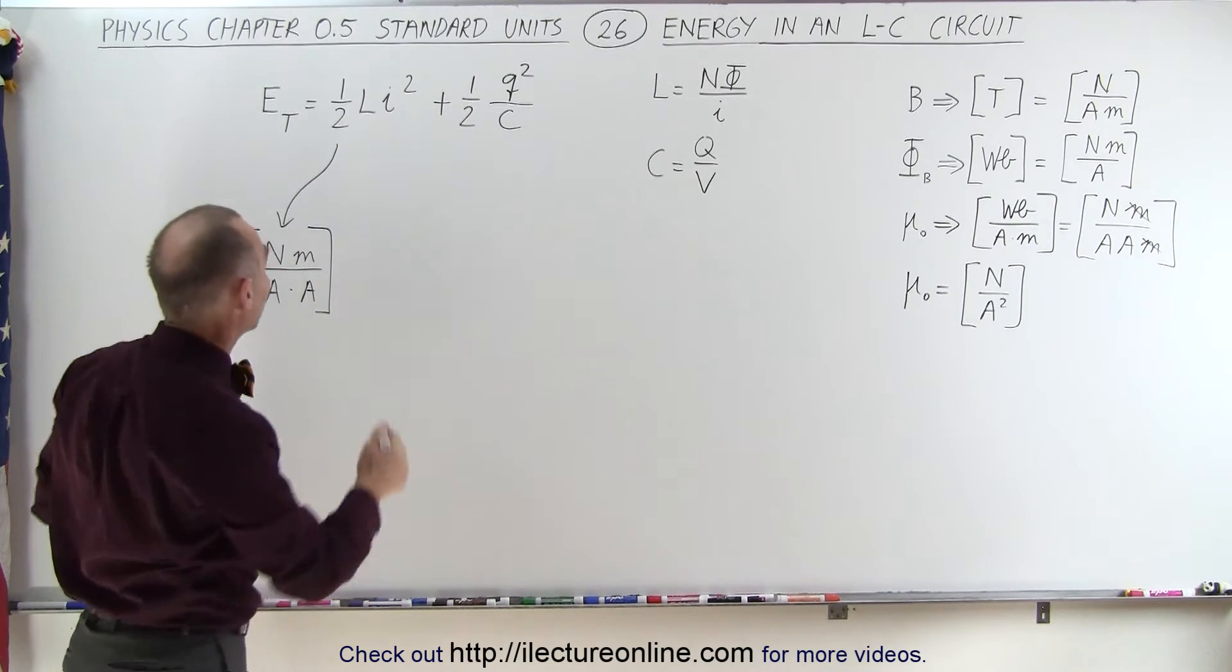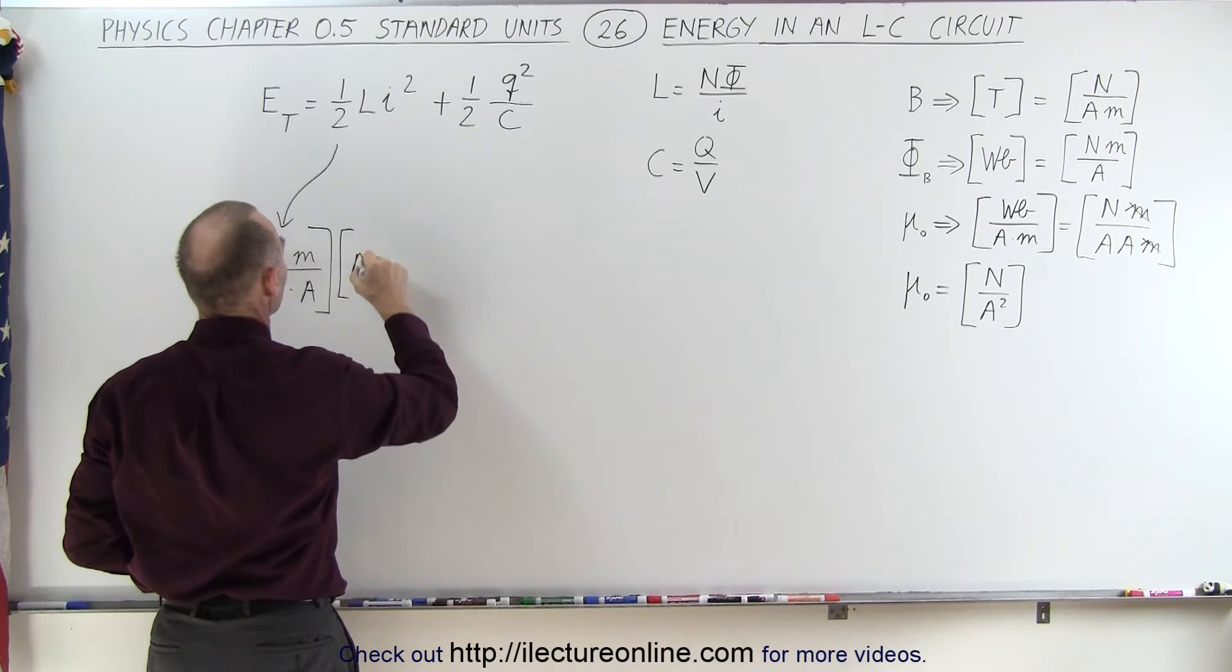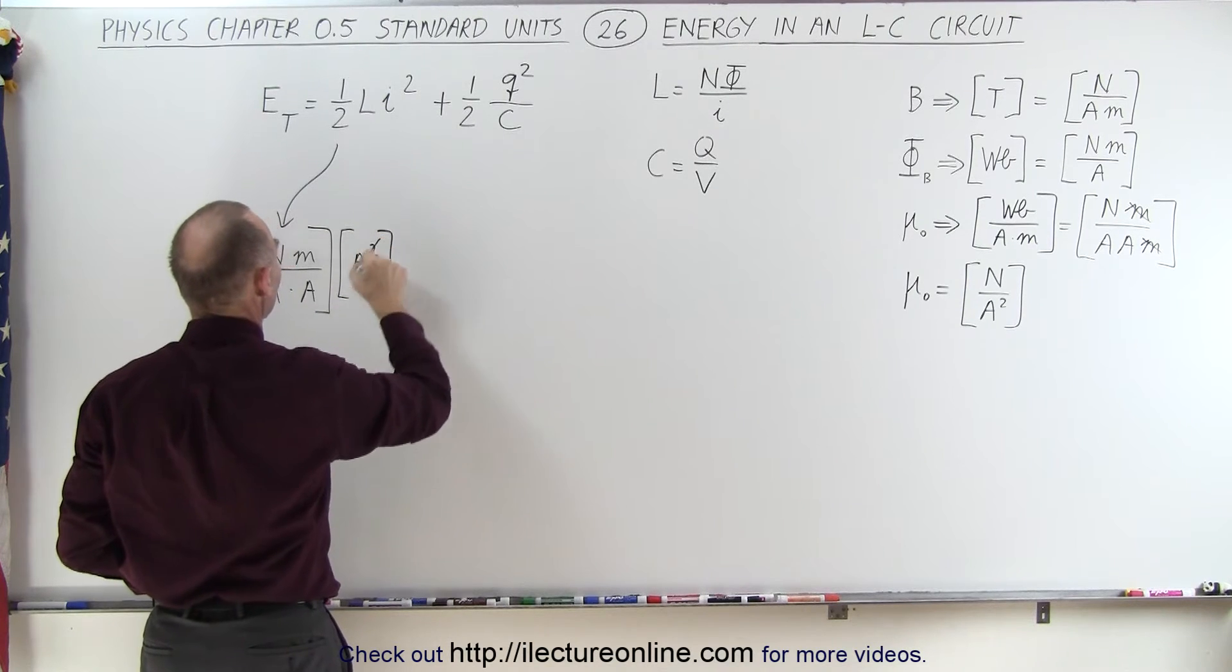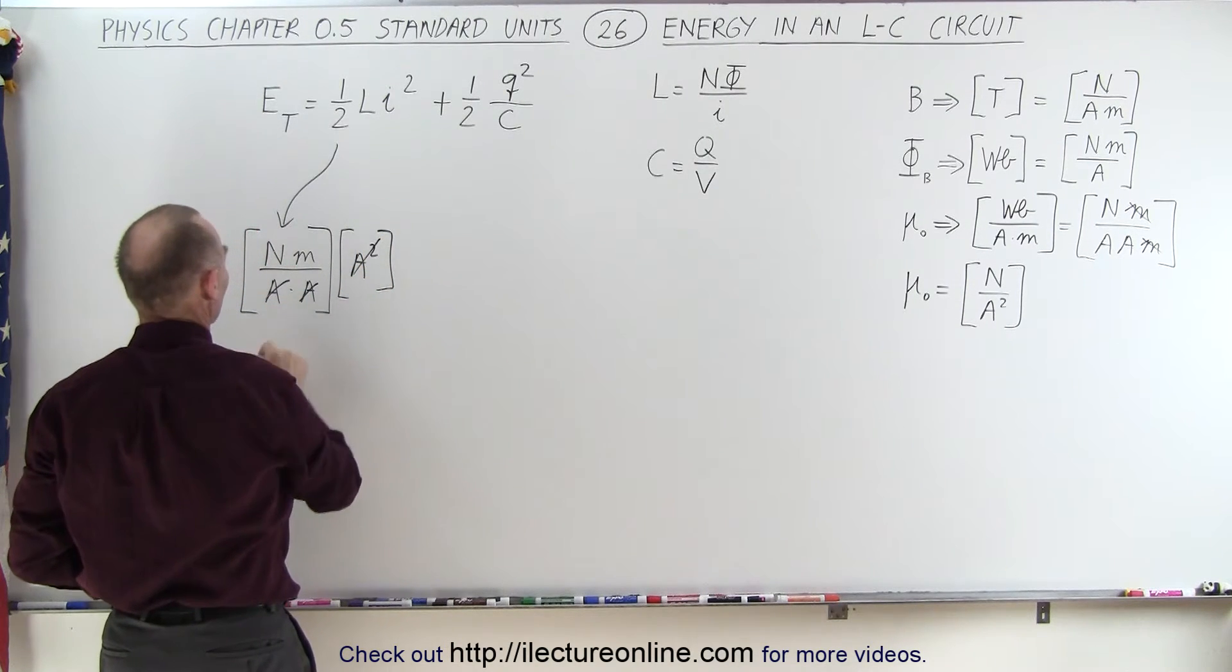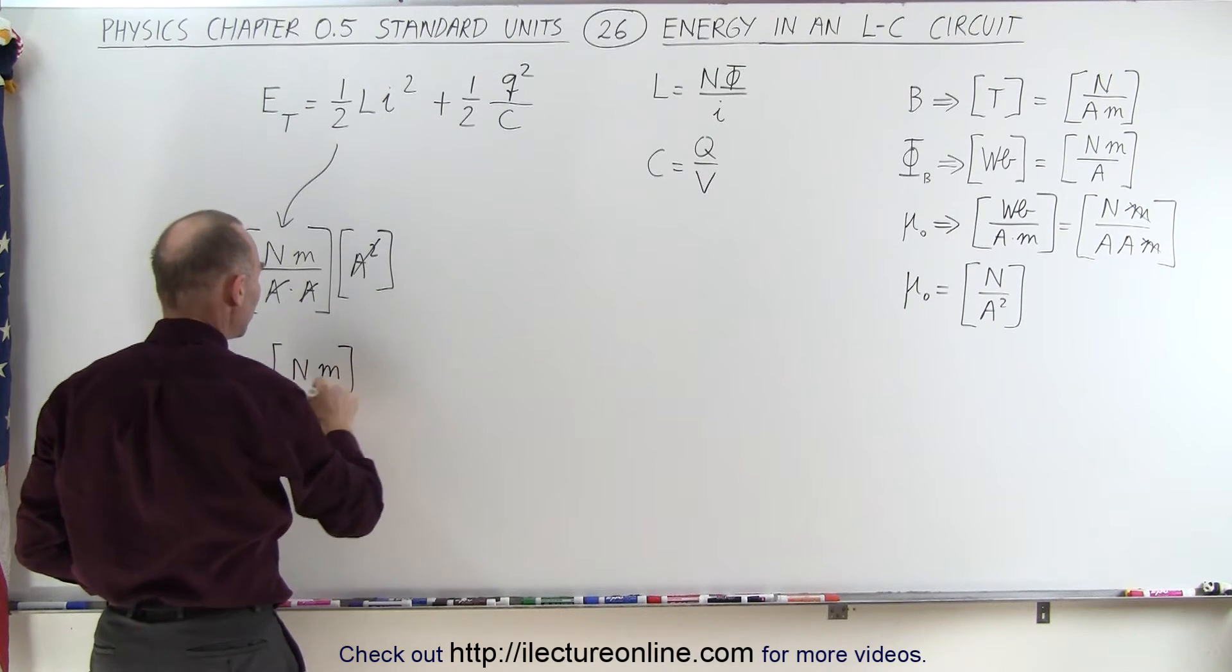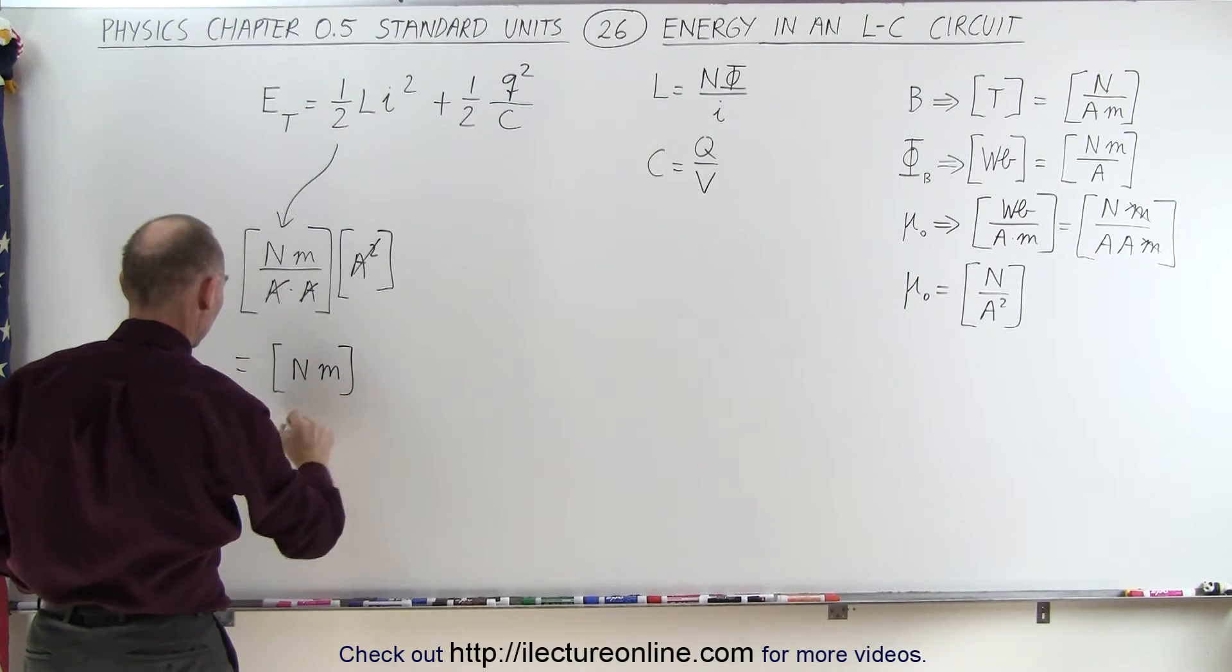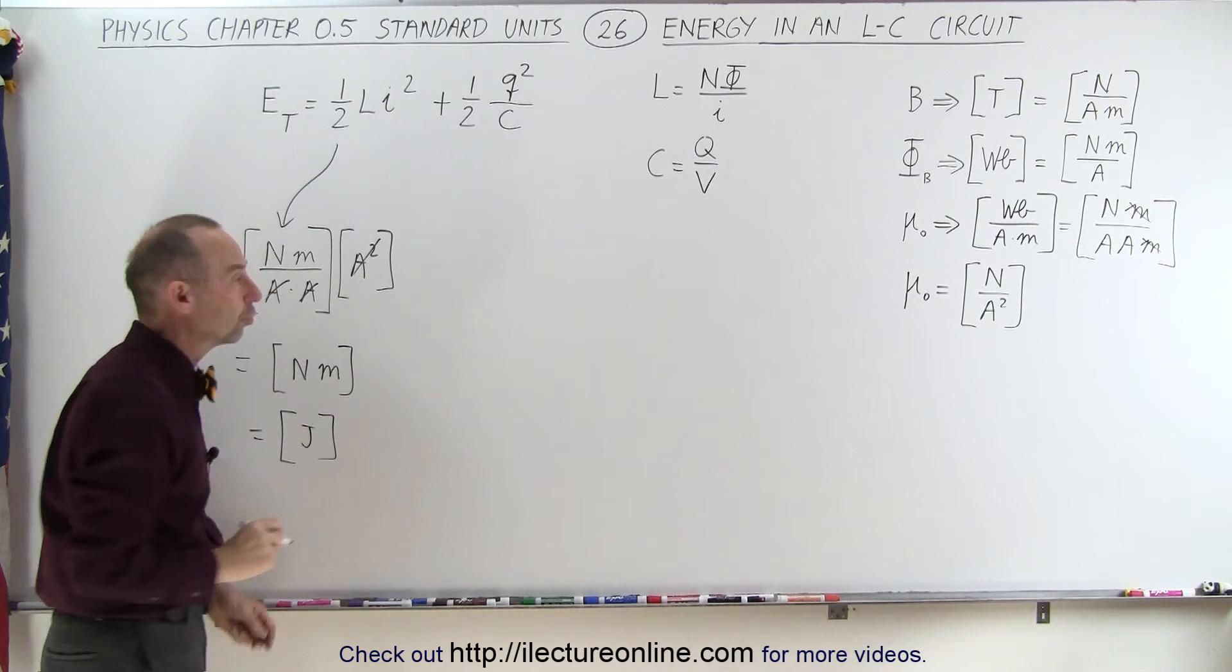And for the current, we have units of amps, so that would be amps squared. And notice that the amps cancel out, and we're left with the units of Newton meters. And of course, Newton meters is the same as joules, so that gives us the units of energy, joules.